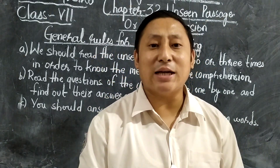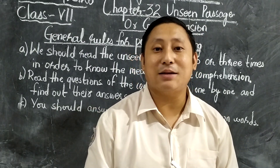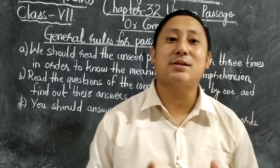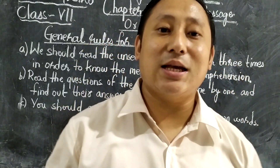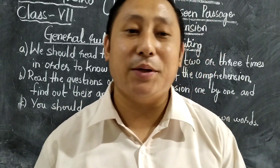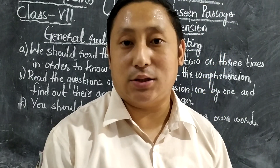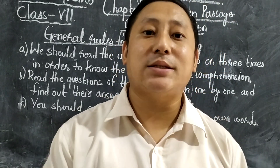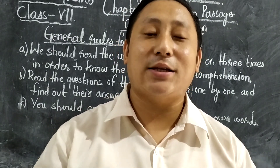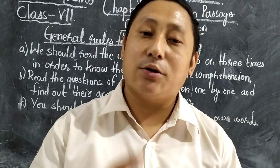Point number five: the title of the unseen passage should suit the meaning of the passage. That means the title of the passage should always match with the passage given in the particular exam or test. If the passage is given to you, sometimes it will be asked: what will be the title of this passage? By reading the passage three or four times, you will come to know exactly what title you should give to that particular passage.